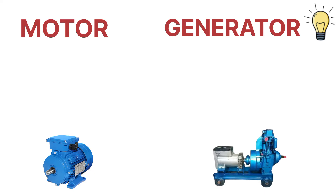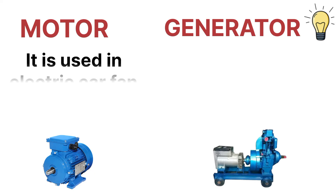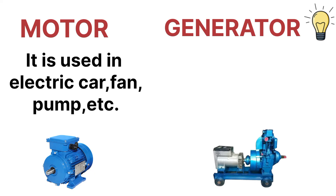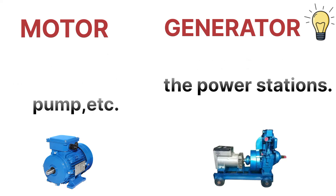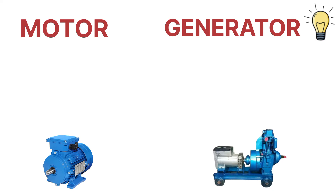Now let's see where we are using the motor and the generator. Motors are used in electric cars, fans, and motor pumps. Generators are generally used at power stations to generate electricity — in power plants, we use generators to produce electricity.